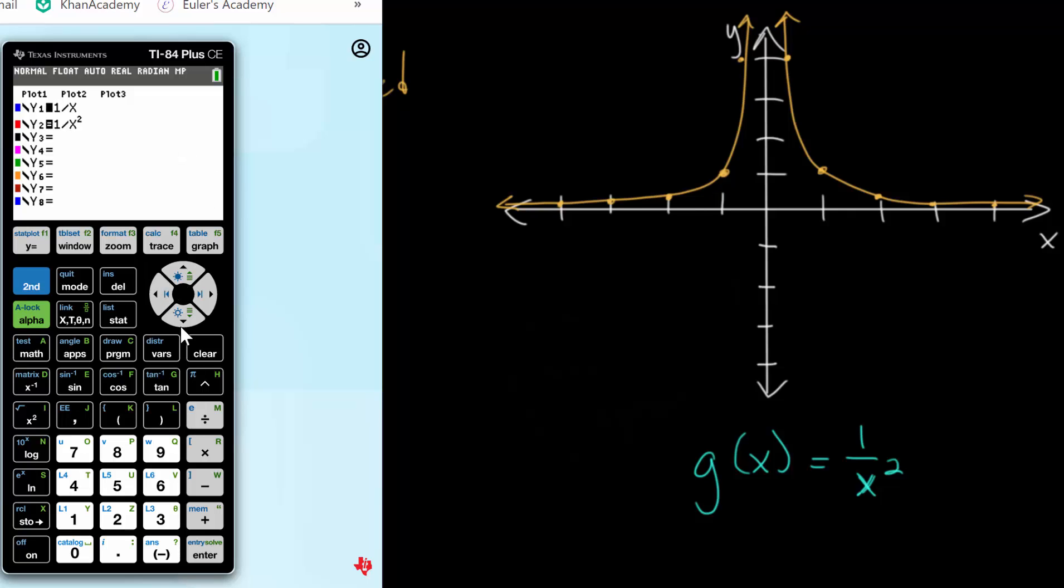And for our other curve, if we look at this blue curve, 1 over x, I'll turn off the other one. We can see something fairly similar. For instance, it's not defined at 0, so we don't get a y value. And if we look at very tiny positive x values, you can see it gives us very large y values. And the smaller the x value, the larger the y value is.